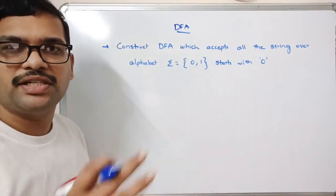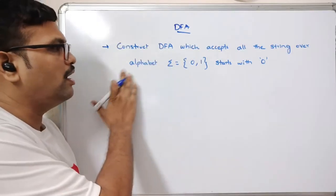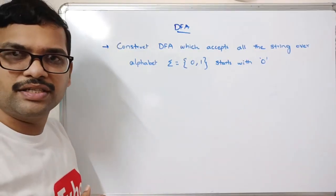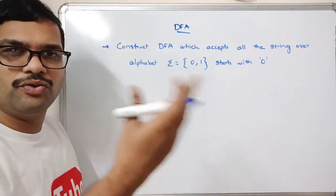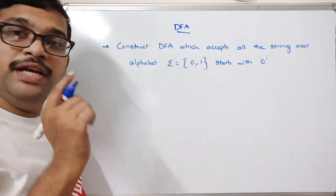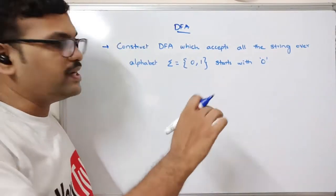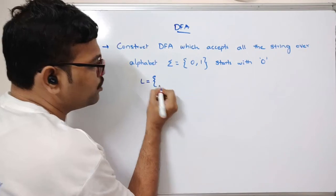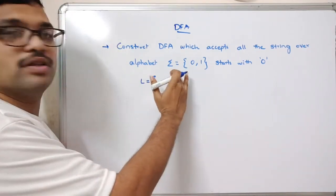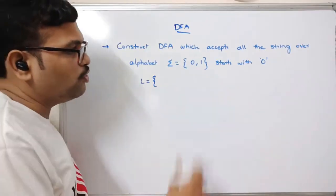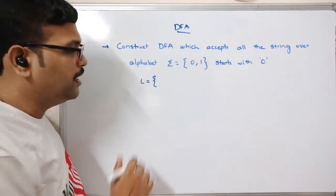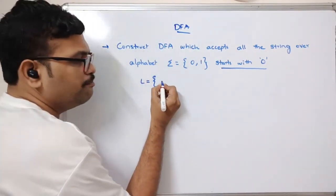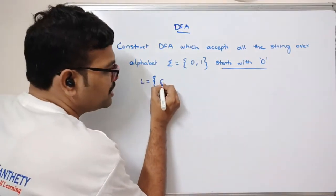First we need to write the language. The language is a collection of strings — we've covered alphabets, strings, and languages in previous sessions (links in the description). The language L consists of strings over {0, 1} that start with 0. The minimum-length string satisfying this condition is just '0' (length 1).